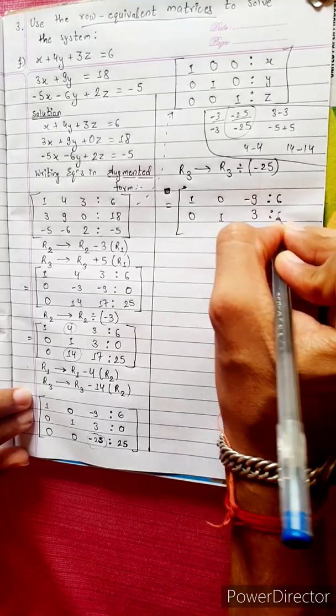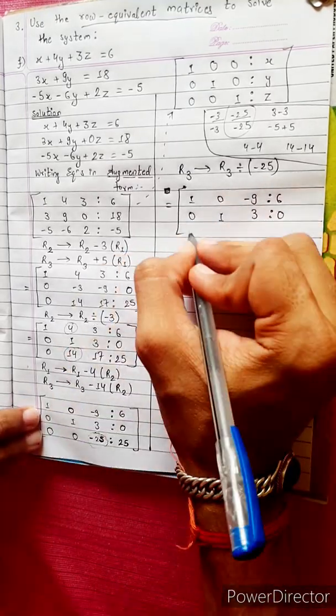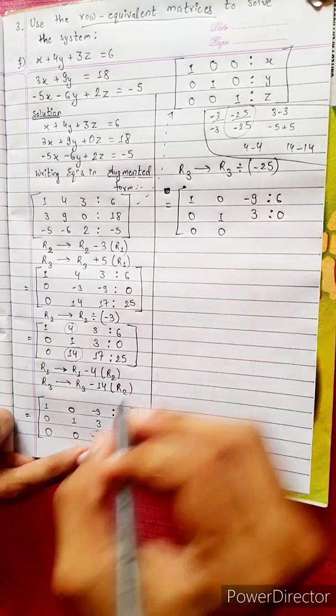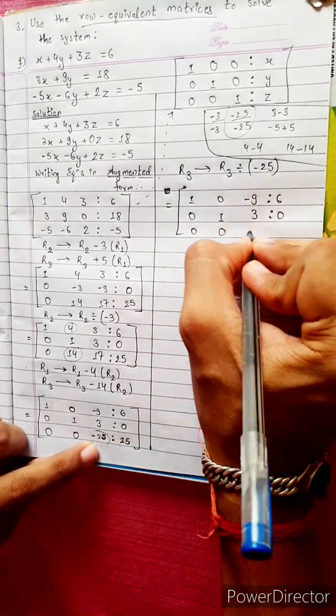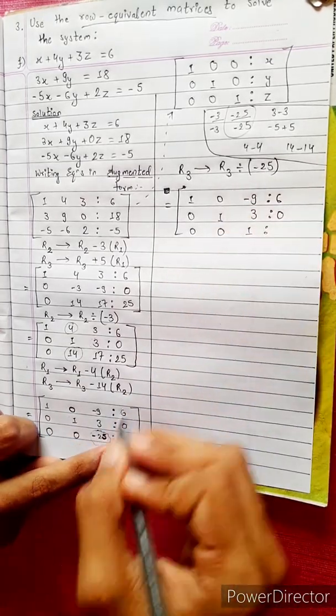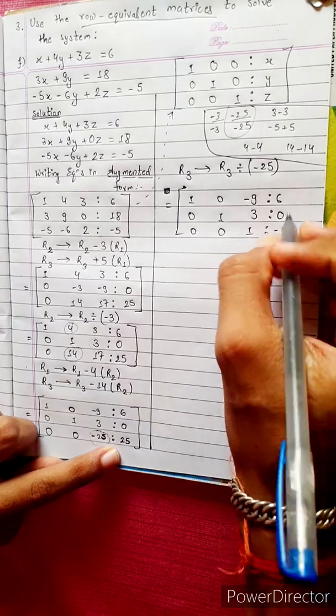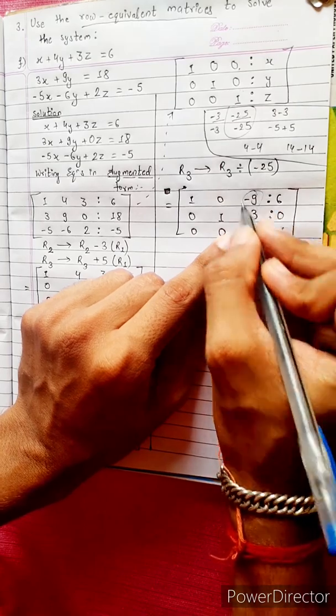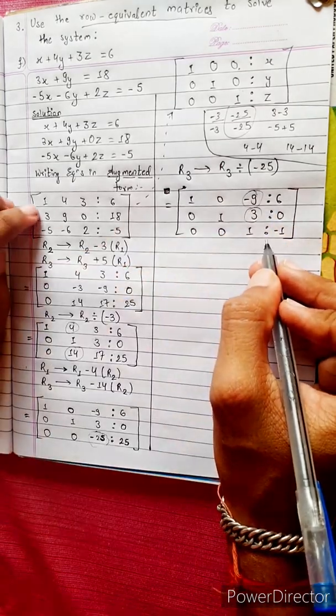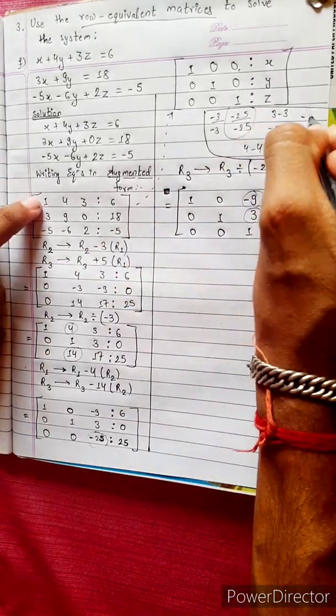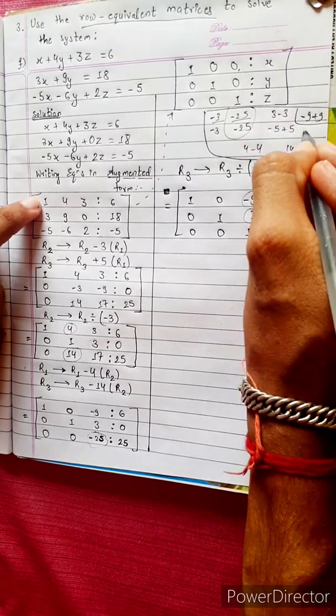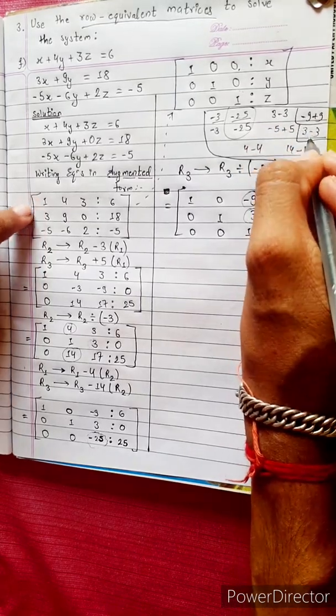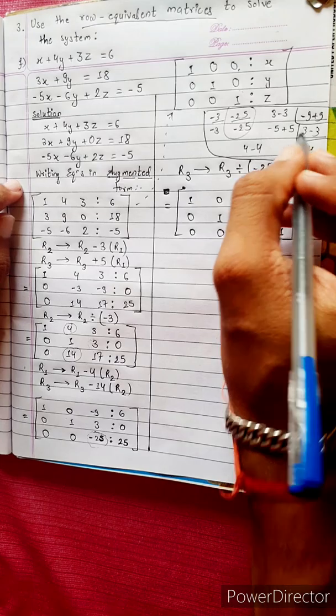R3 divided by minus 25: 0, 0, 1 is to minus 1. Now R1 changes into R1 plus 9 times R3, and R2 changes into R2 minus 3 times R3.